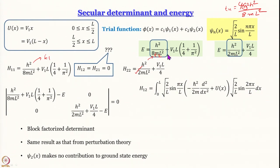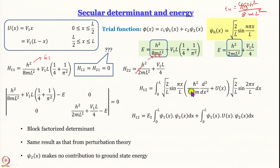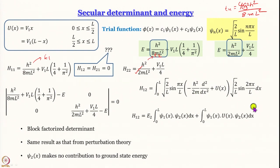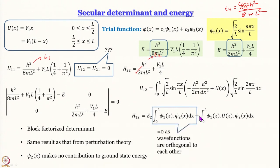For the first term, the zeroth-order Hamiltonian acting on ψ₂ gives eigenvalue E₂. E₂ is a constant that comes out, leaving ε₂ ∫₀^L ψ₁(x) ψ₂(x) dx. Since ψ₁ and ψ₂ are orthogonal, this integral is exactly zero.